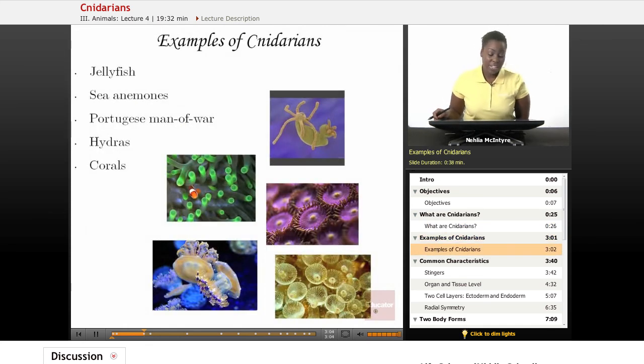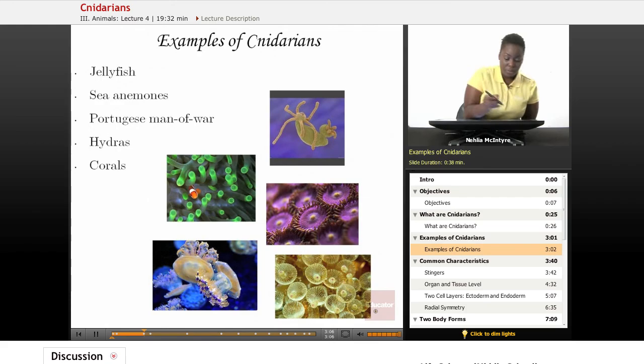So some examples of Cnidarians, like I just discussed, would be jellyfish, sea anemones. There's a special type of Cnidarian that's actually made up of four organisms put together, and that's called the Portuguese Man of War. And we also have what we call hydras and corals.